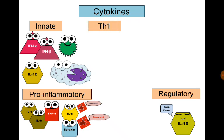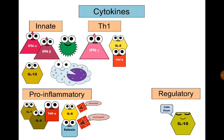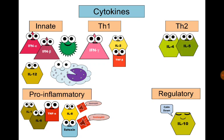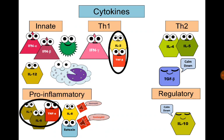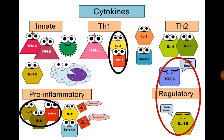Cytokines produced by T helper cells: T helper 1 lymphocytes produce interferon gamma — the most important cytokine and hallmark of the T helper 1 cell — as well as interleukin-2 and tumor necrosis factor beta. T helper 2 cells produce interleukin-4, the hallmark of the T helper 2 cell, as well as interleukin-5 and transforming growth factor beta. T helper 1 cytokines promote inflammatory response, while transforming growth factor beta has anti-inflammatory function. Hematopoietic cytokines include interleukin-3 and granulocyte-monocyte colony-stimulating factor produced by T helper cells, and interleukin-7 produced by bone marrow.